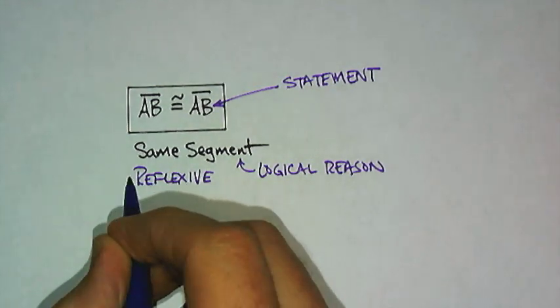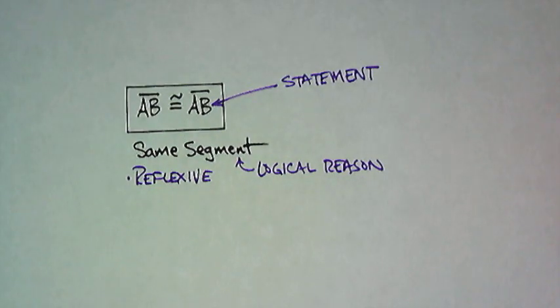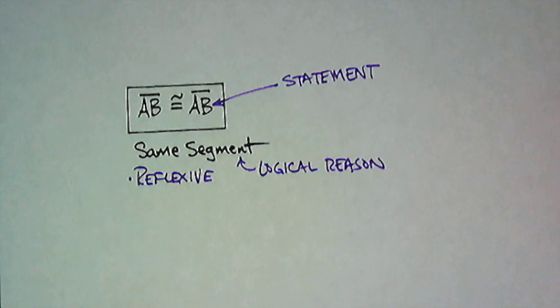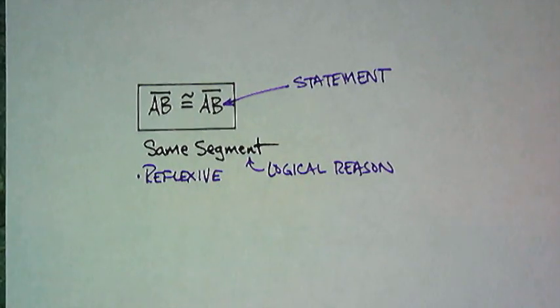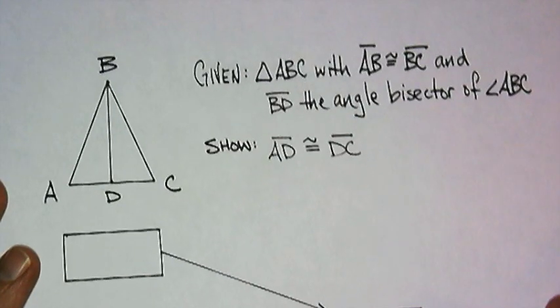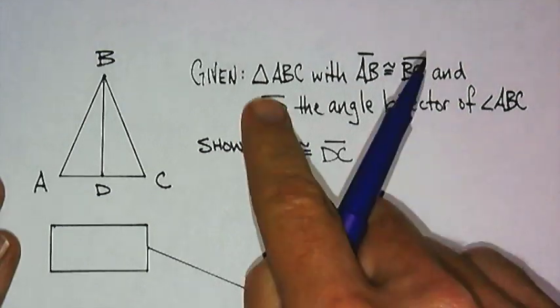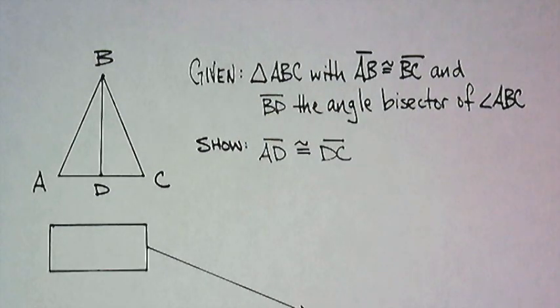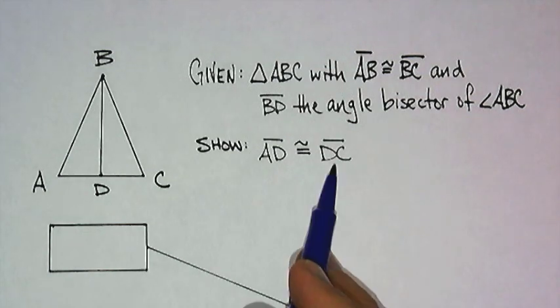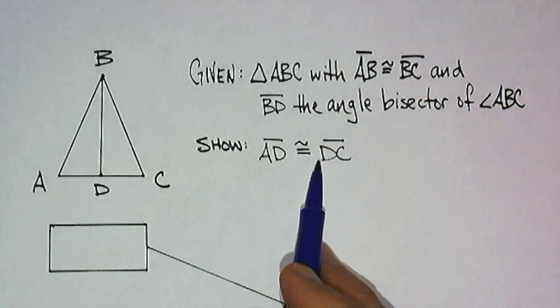Some of you in Algebra 2 may know this property as the reflexive property, and I'm totally fine with you writing that down. But later on when we're doing all the proofs this year, we'll get there. Let's move on and make a flowchart. I'm going to give you some information. In this case, I have triangle ABC with AB congruent to BC, and BD is the angle bisector of angle ABC. I would like you to show me that AD must be congruent to DC.